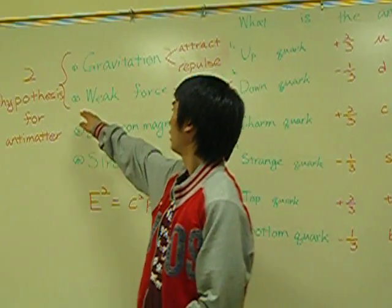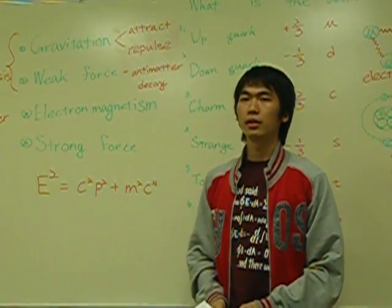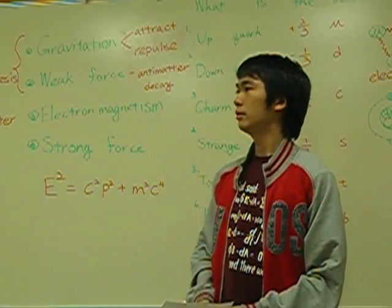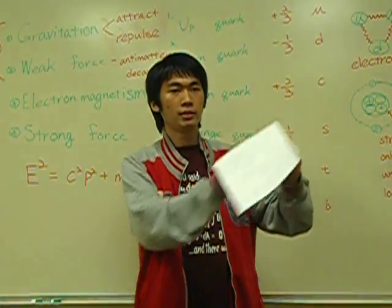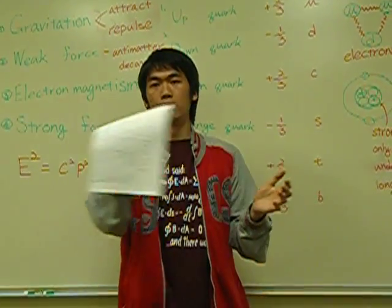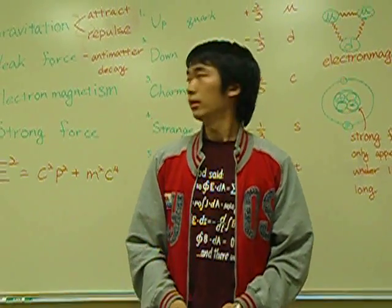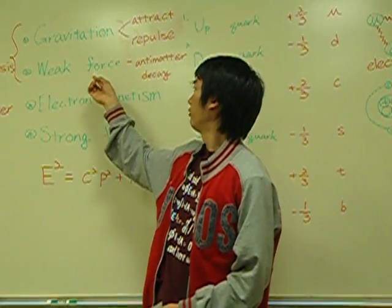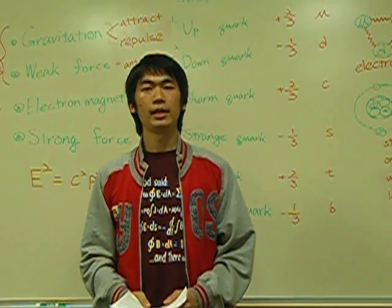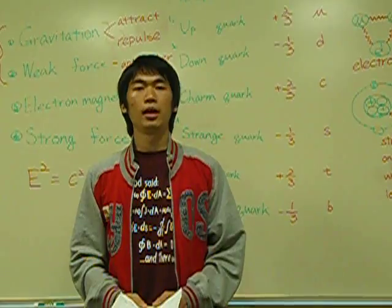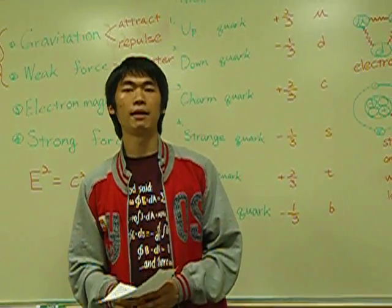The second hypothesis is called the weak force. The weak force causes antimatter to decay from a very big object into smaller and smaller things. When the Big Bang appeared, the weak force affected antimatter, so the antimatter became less than matter. After the Big Bang, the antimatter disappeared and only matter was left.